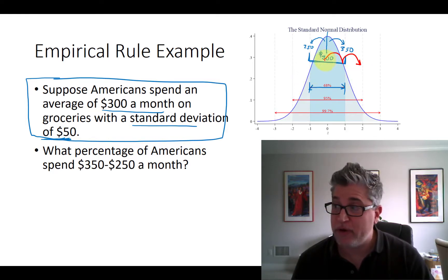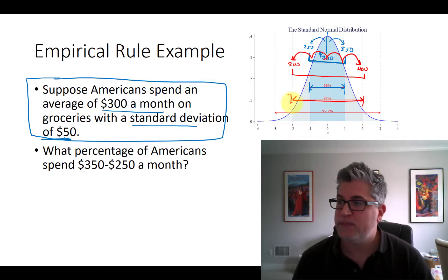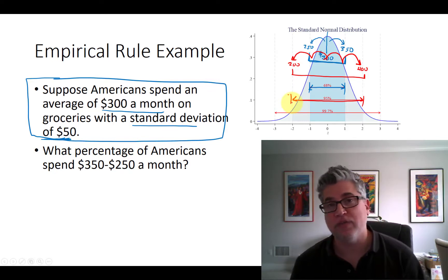And if we subtract one, two standard deviations, that brings us from $300 to $250 to $200. And okay, now we can say that 95% of Americans spend between $200 and $400 on groceries a month.